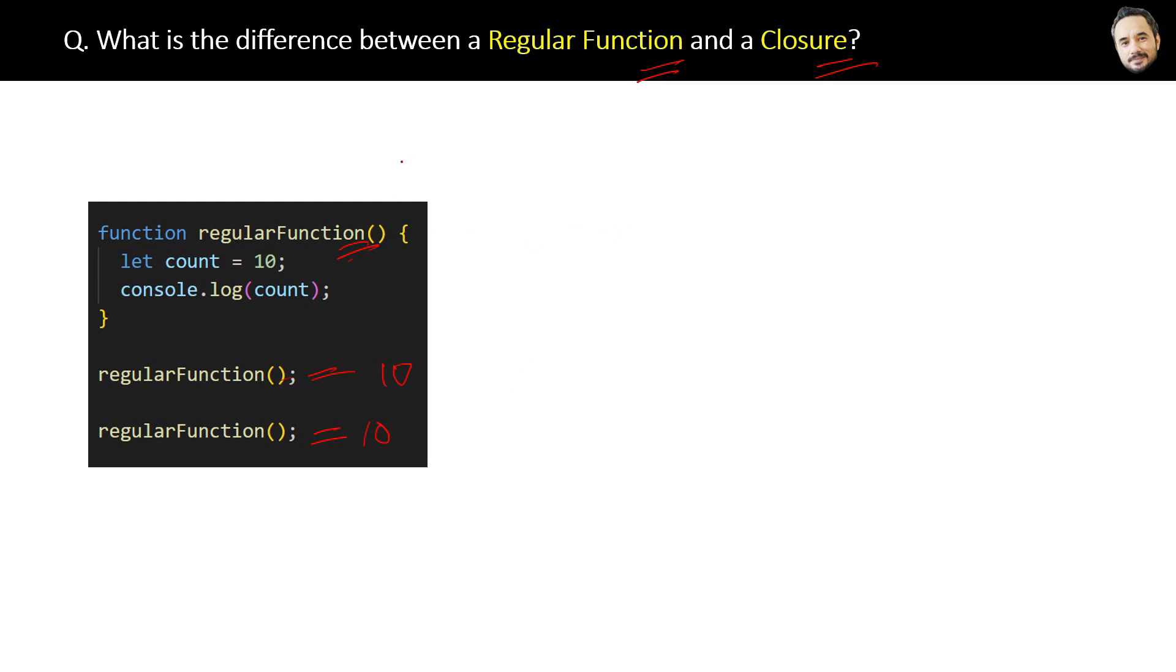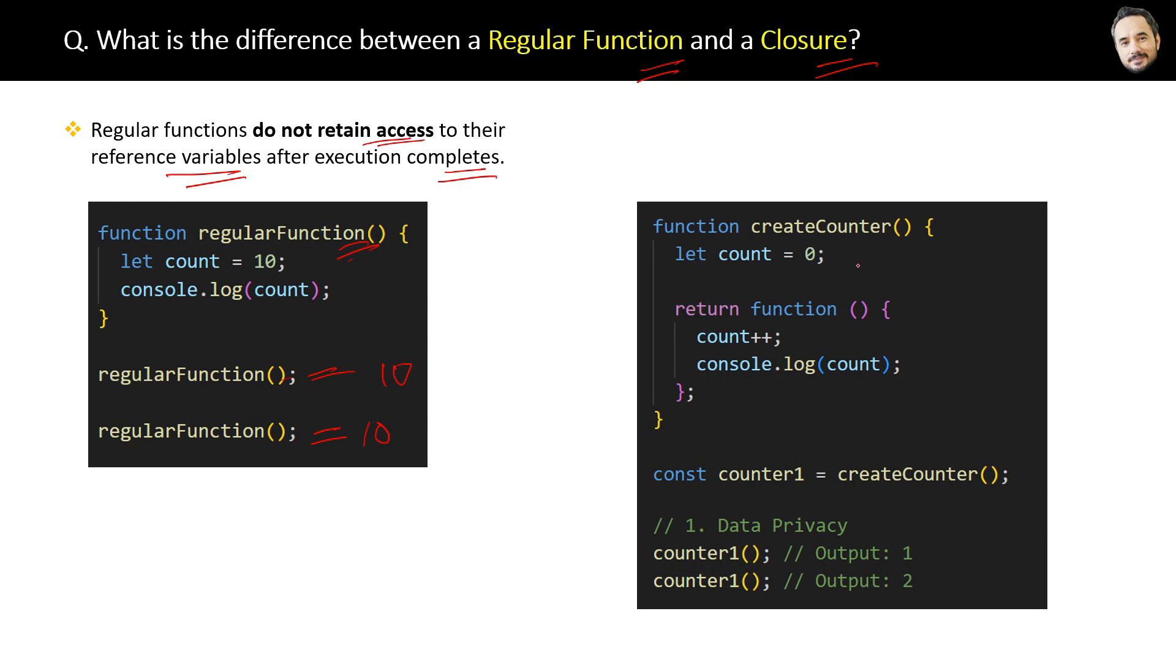No state maintenance here, no persistence of data. The conclusion is: regular functions do not retain access to their reference variables after the execution completes. Whereas this is the code of the closure, and here is counter one.